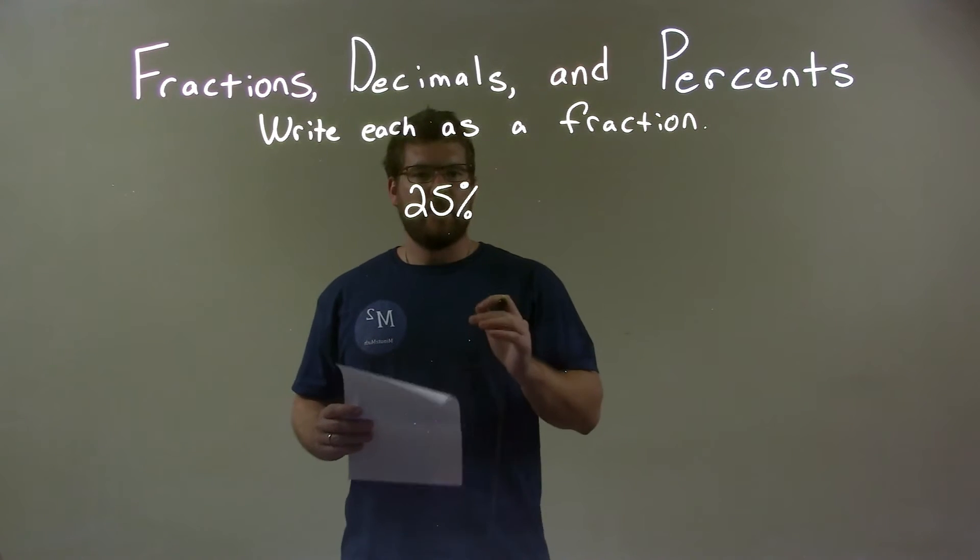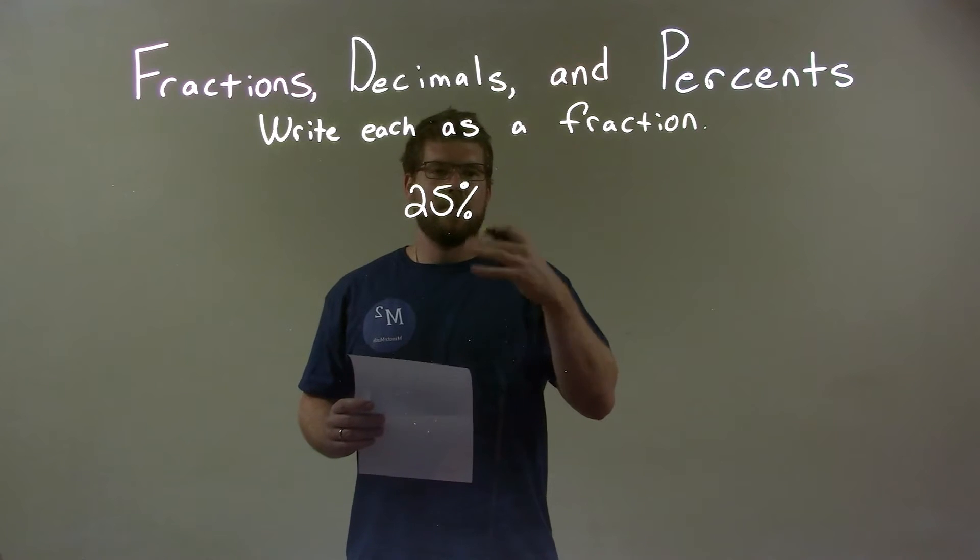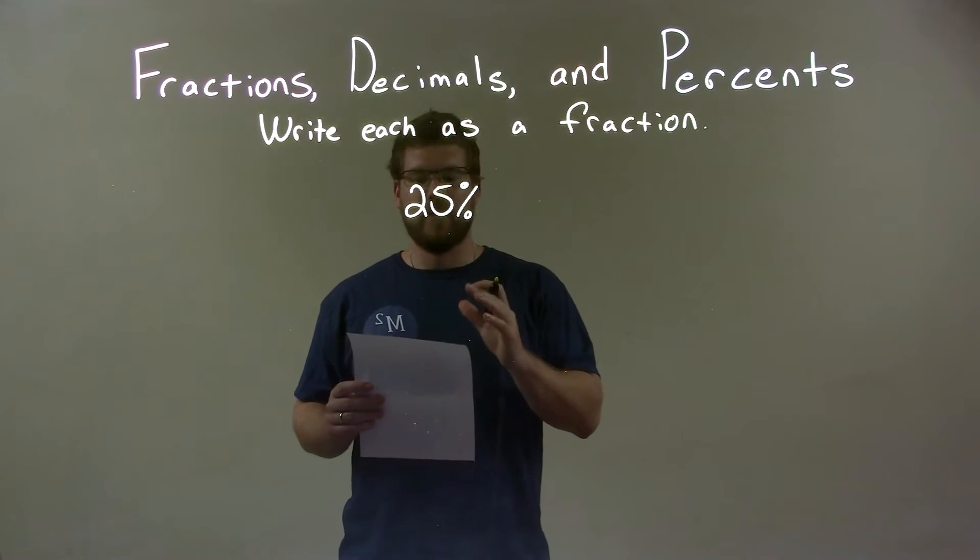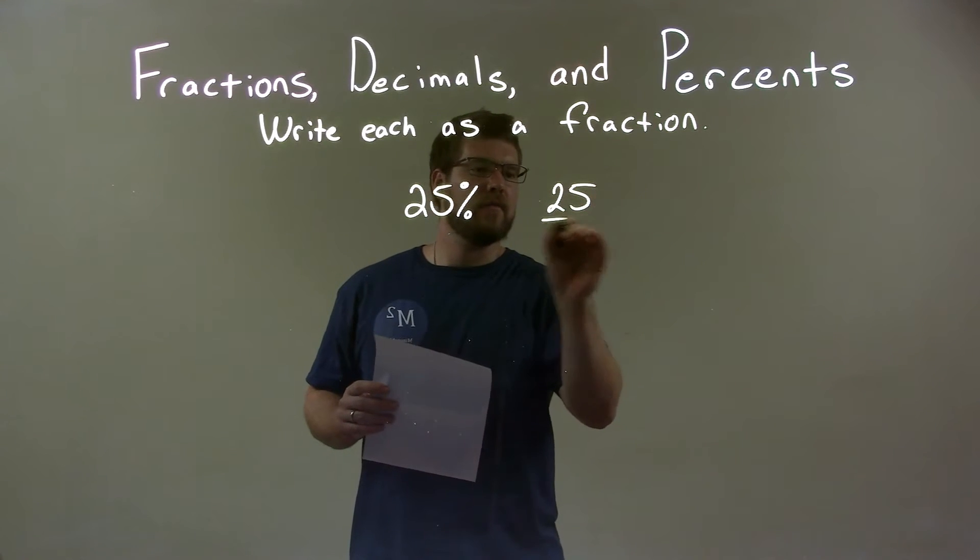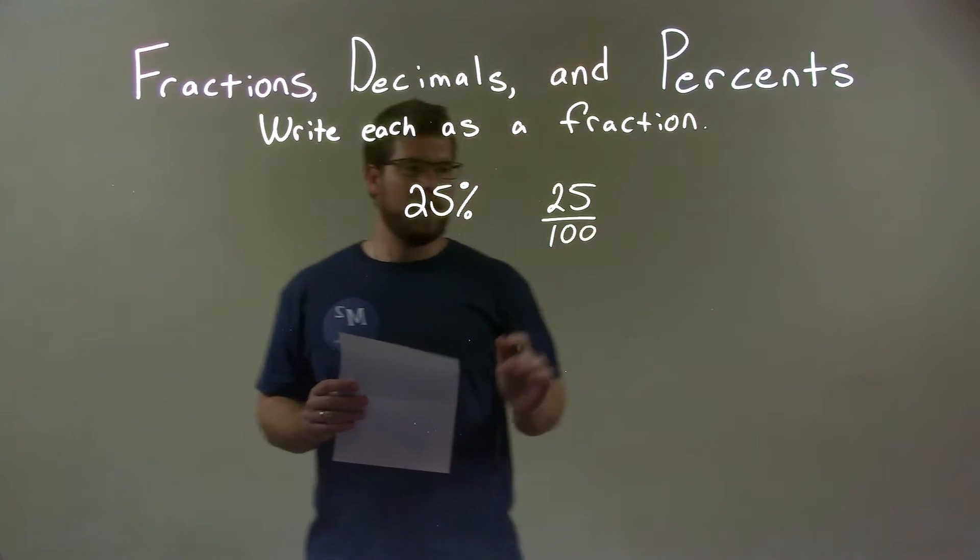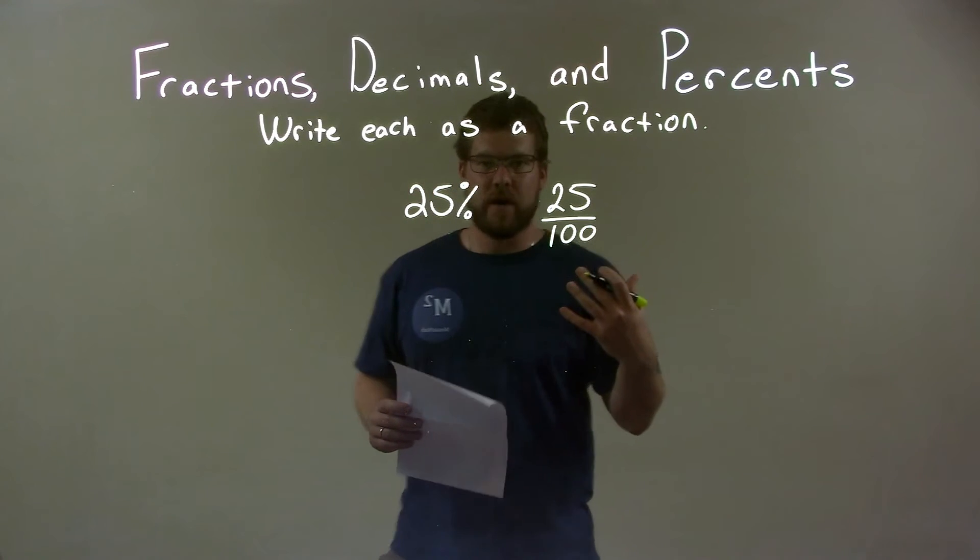Well, twenty-five percent is twenty-five percent, really, you can say twenty-five out of a hundred, right? Twenty-five of a hundred. So we can put twenty-five out of one hundred there. So essentially we have a fraction, but we need to simplify it, right?